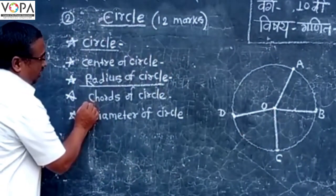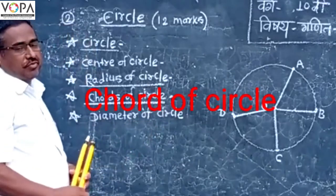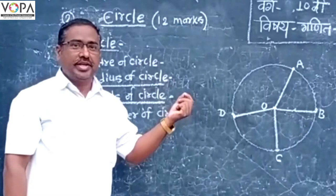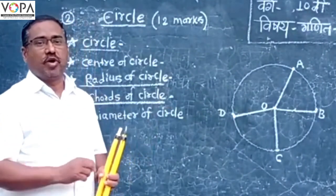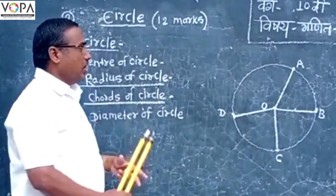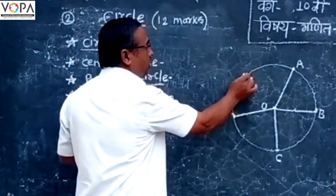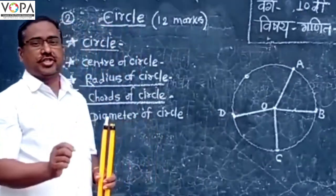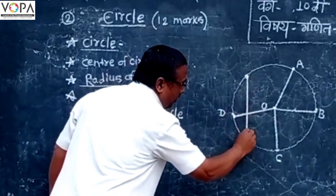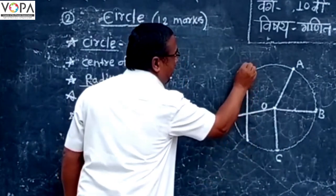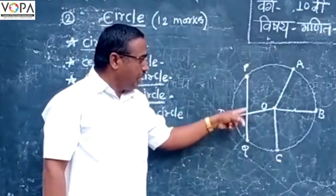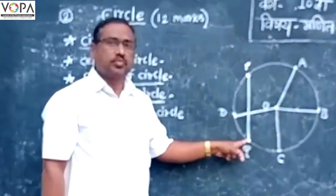The next term is the chord of circle. A segment joining any two points on the circle is said to be a chord of the circle. Point P and Q are two points on the circle, and the segment PQ is the chord of the circle.